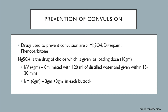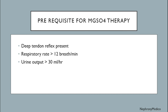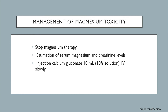Prerequisites for magnesium sulfate therapy: deep tendon reflexes should be present, respiratory rate more than 12 breaths per minute, and urine output more than 30 milliliters per hour. Management of magnesium toxicity: estimation of serum magnesium and creatinine levels, and injection of calcium gluconate 10 milliliters of 10% solution given IV slowly.